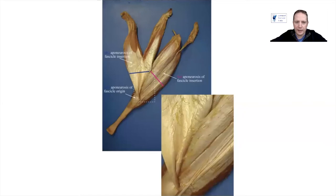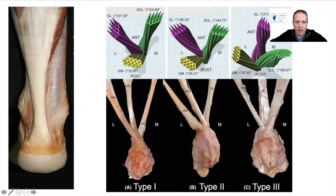The Achilles tendon is a confluence of both the soleus muscle, which attaches to the back of the tibia and fibula, and the gastrocnemius muscles, which have two heads that both insert above the knee. These come together and you see the aponeurosis forming onto one another, as you can see here, which then goes down into your triceps surae. You can actually divide these all the way down to its insertion.